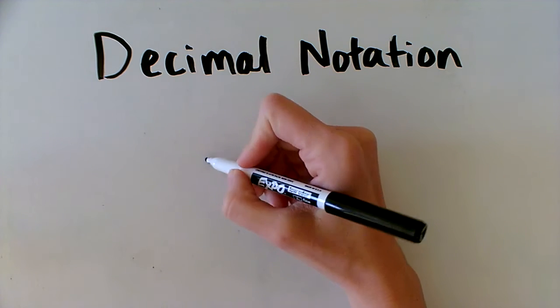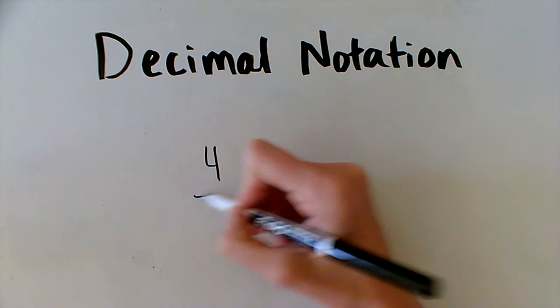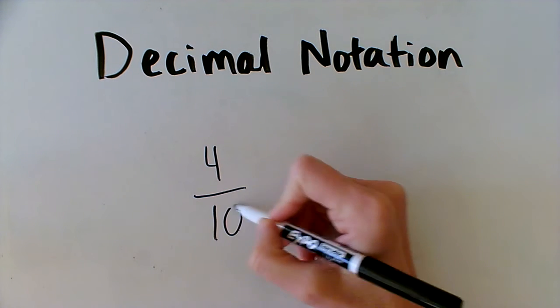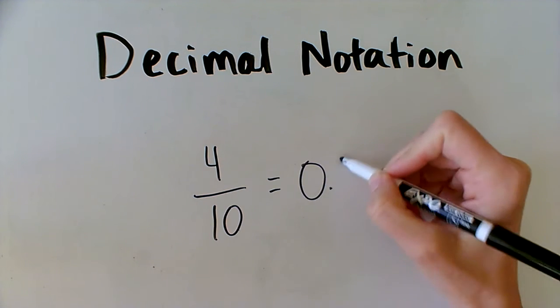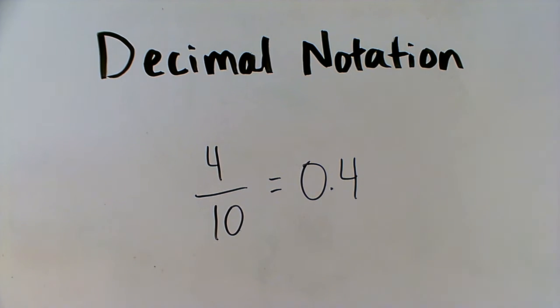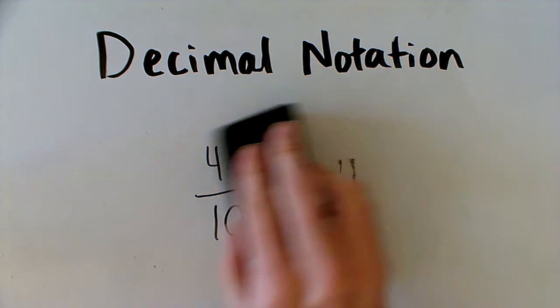To write a fraction as a decimal, you have to understand place value. Let's review the places in the place value system.